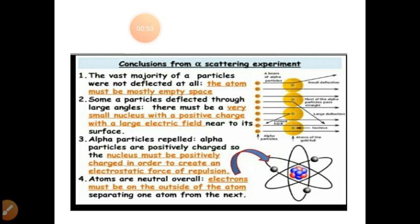Atoms are neutral overall. All electrons must be on the outside of the atom, separating one atom from the next.